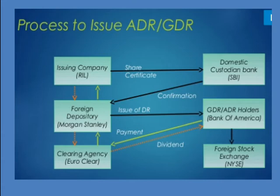Key parties involved are the issuing company, domestic custodian bank, foreign depository, GDR/ADR holder, clearing agencies, and foreign stock exchange. The issuing company gives the share certificate to the domestic custodian bank. The domestic custodian bank gives confirmation to the foreign depository, which then issues the depository receipt to the GDR/ADR holder. These holders make payment to the clearing agency, which distributes dividends.